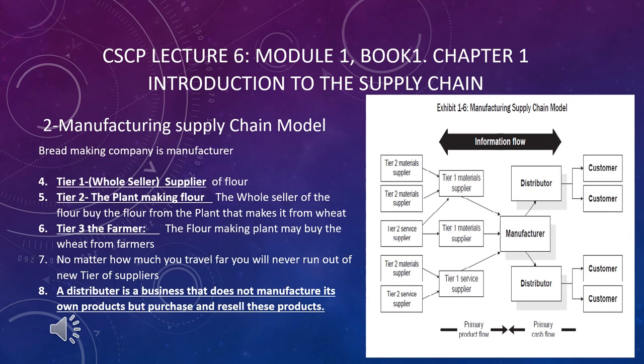Looking at Exhibit 1-6, the manufacturing supply chain model: on the right side of the manufacturer are distributors and customers, and on the left side are the Tier 1 suppliers and Tier 2 suppliers.